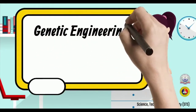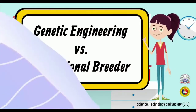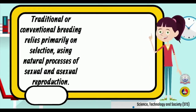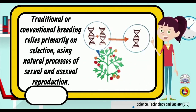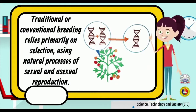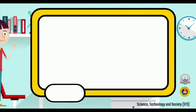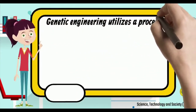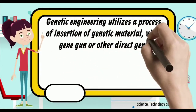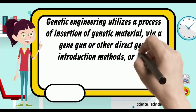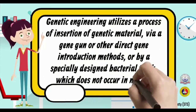Regarding genetic engineering versus traditional breeding: traditional or conventional breeding relies primarily on selection, using natural processes of sexual and asexual reproduction. Genetic engineering, on the other hand, utilizes a process of insertion of genetic material via a gene gun or other direct gene introduction methods, or by a specially designed bacterial vector which does not occur in nature.